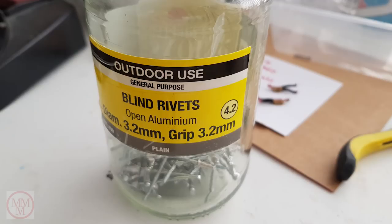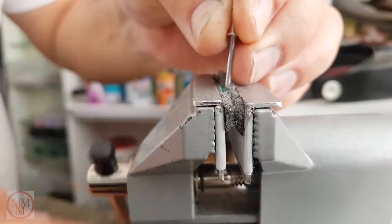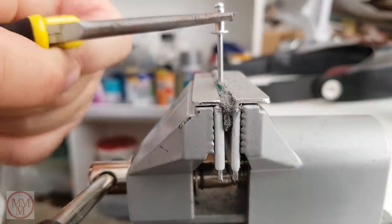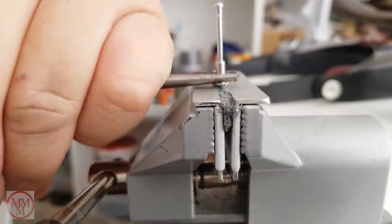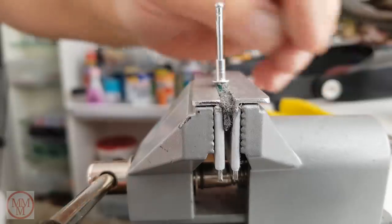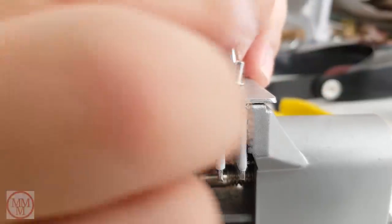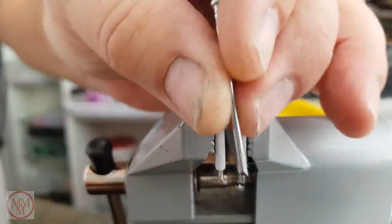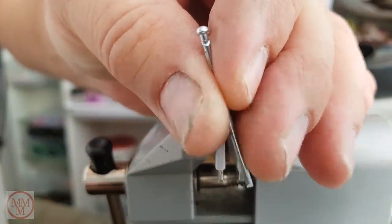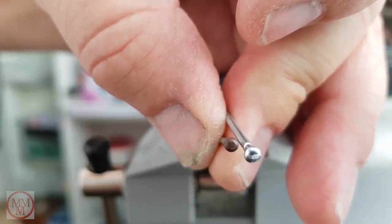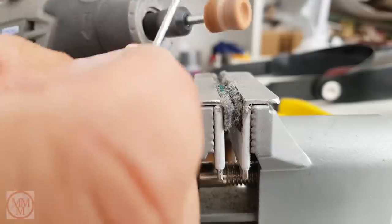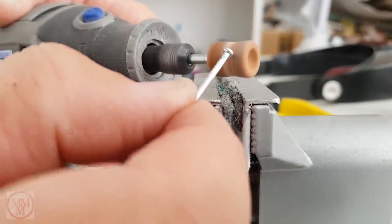For the axles, I'm using these 3.2 millimeter blind rivets. To begin with, I remove the rivet collar because that's going in the bin as I don't need it. All I'm interested in is the long piece. This is what I'm going to make into an axle. Here for comparison you can see it alongside an original axle.